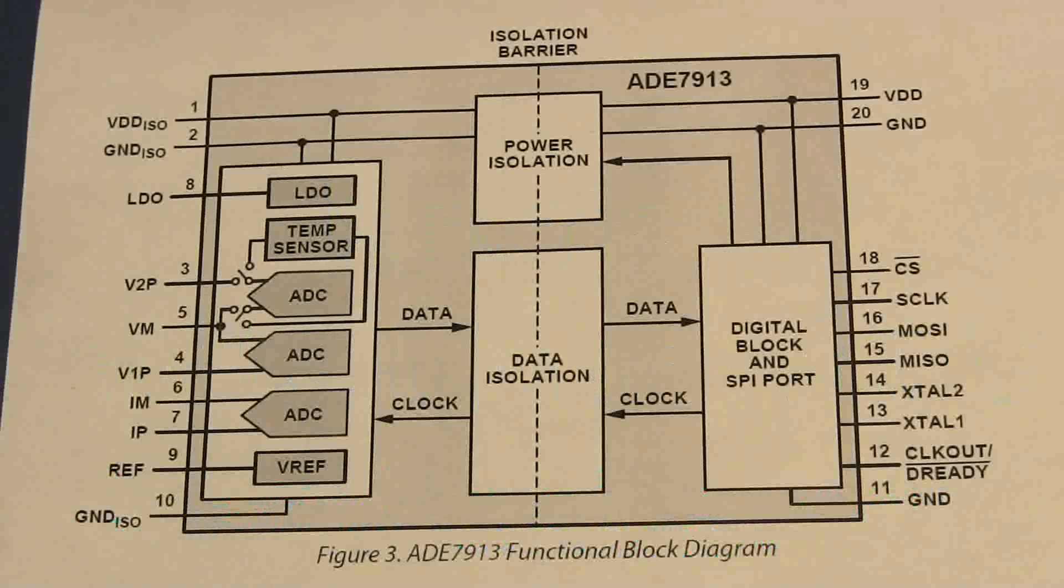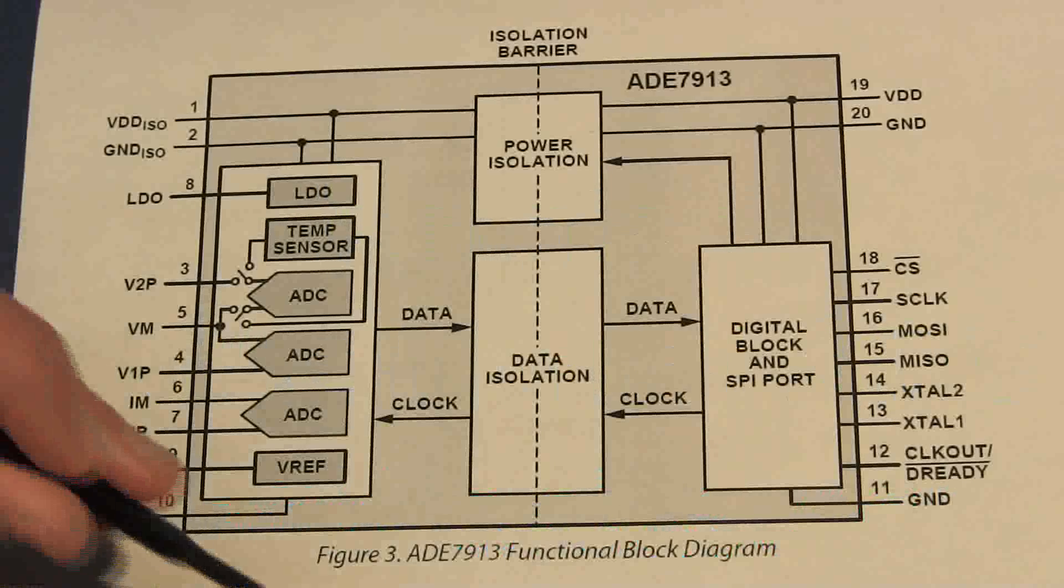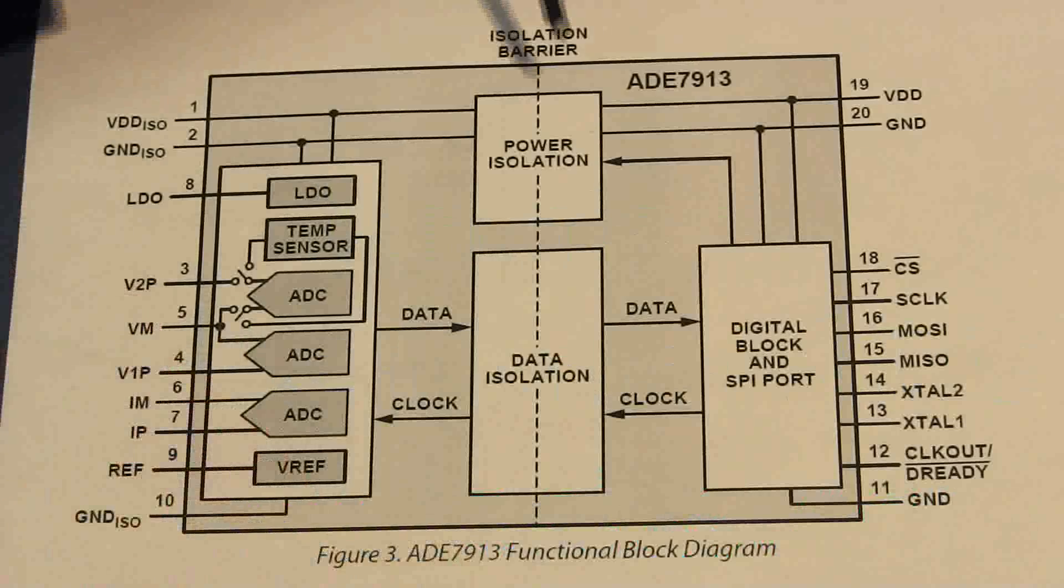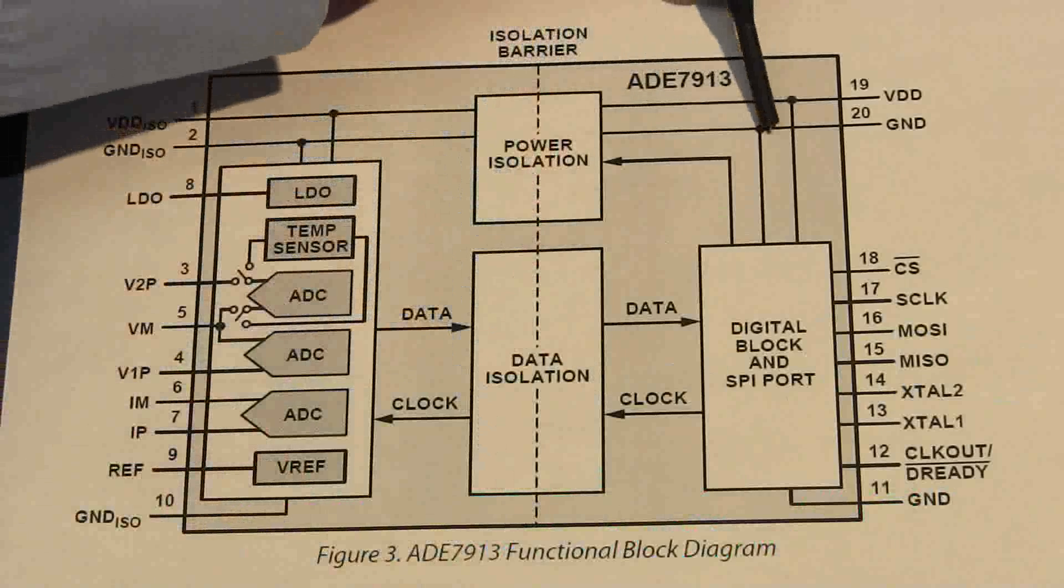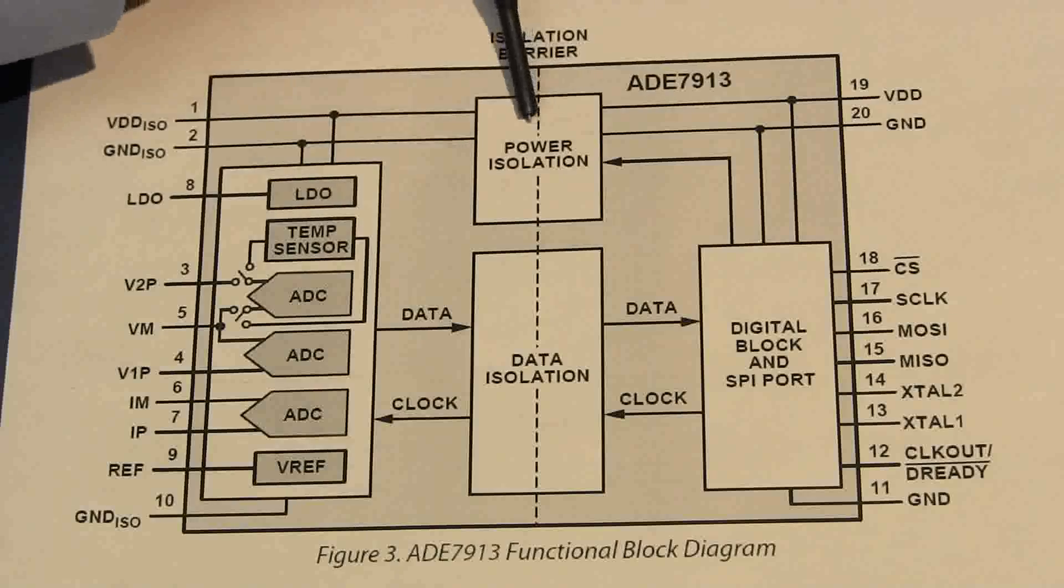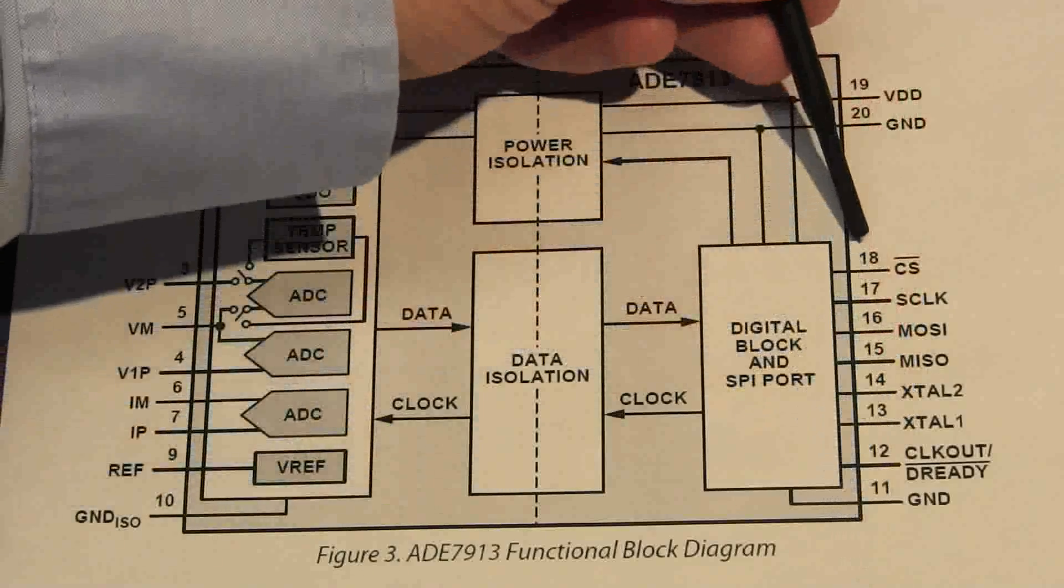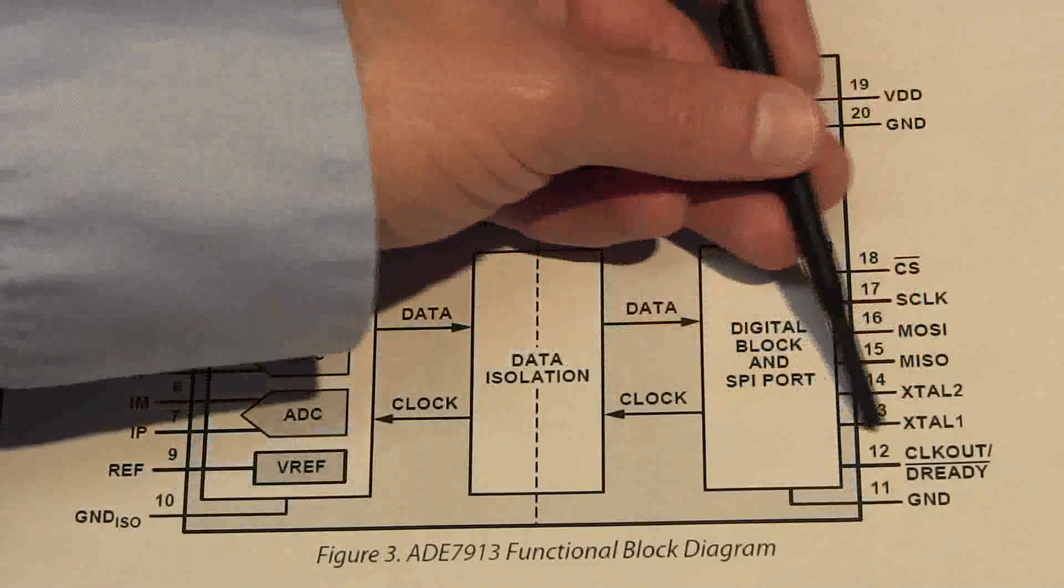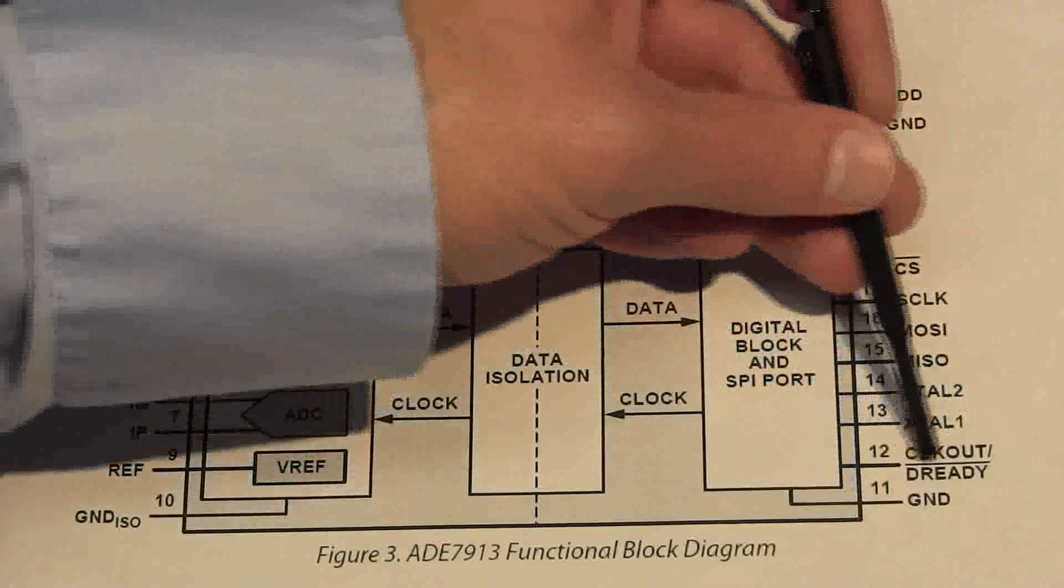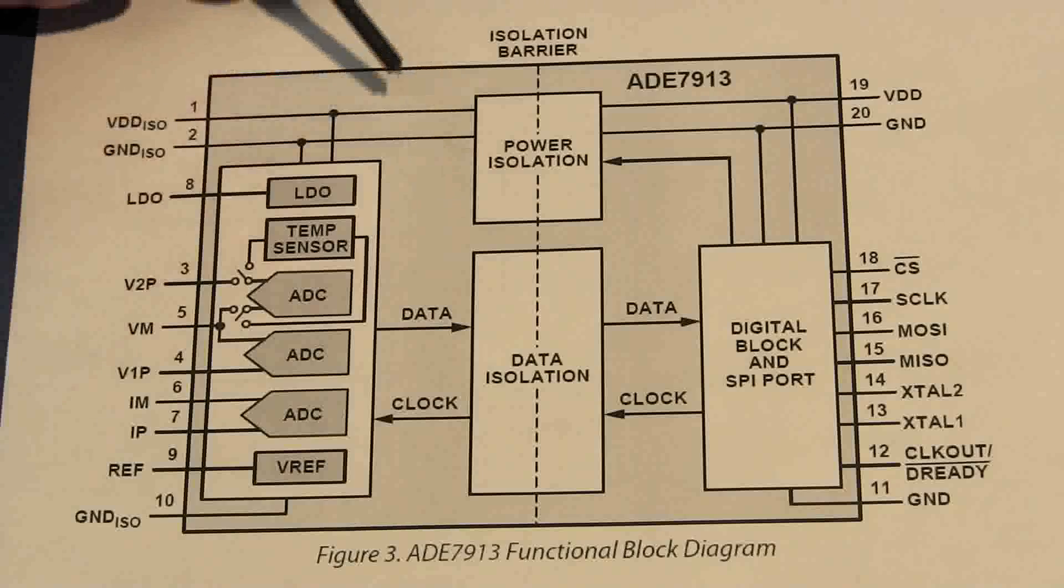The 7913 has some nice features to it. First off, it provides complete galvanic isolation right through here, the middle of the chip. Power comes in, DC power comes in, and the microcontroller connects out on this side via standard SPI protocol. You do need to attach a crystal to it, and that's about it.